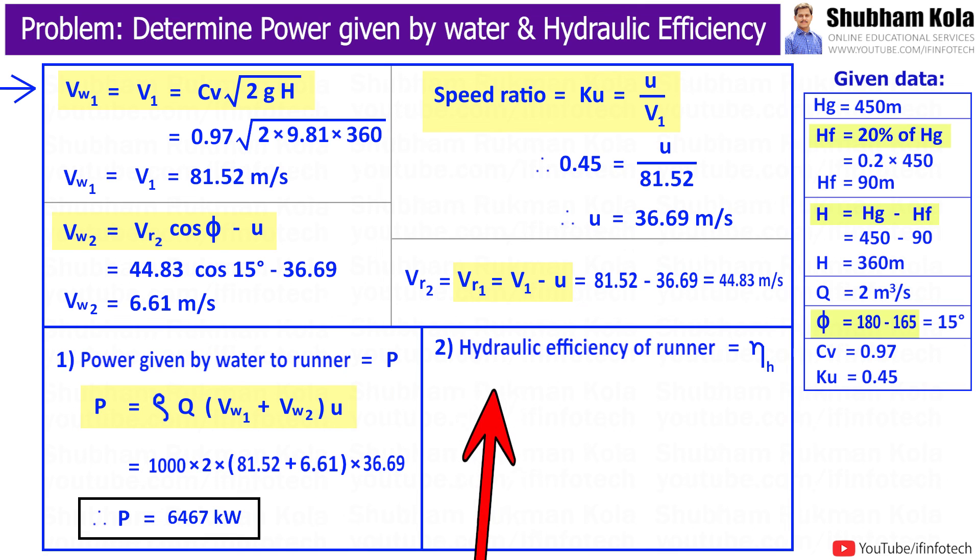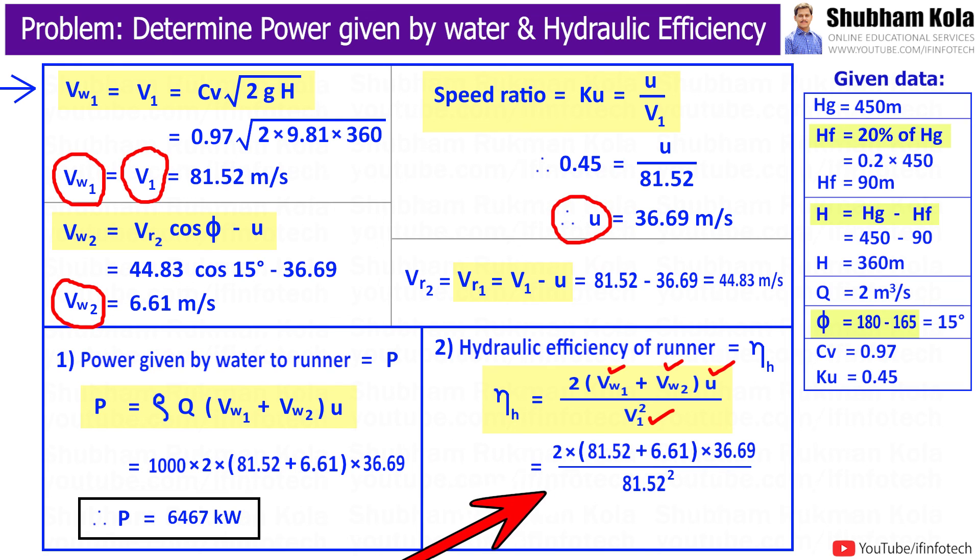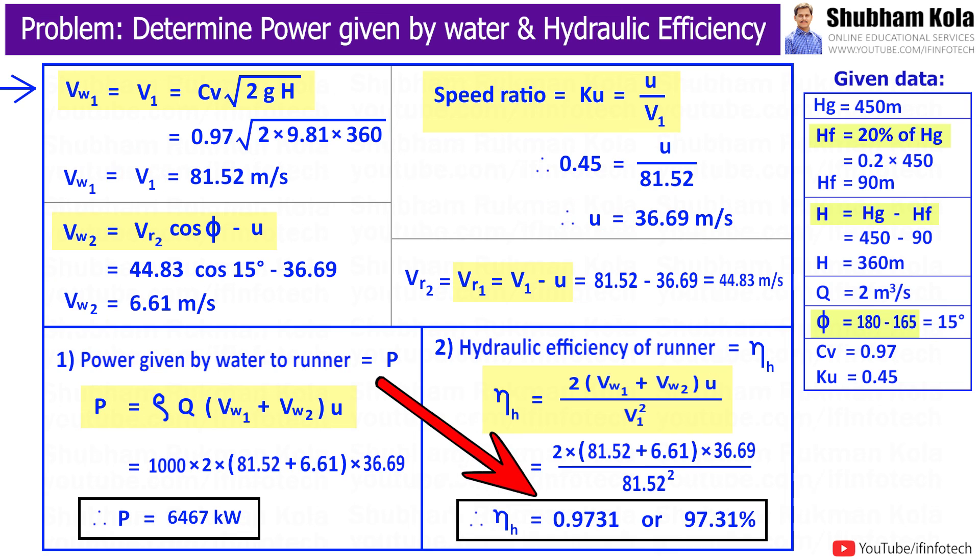Now in the third step, we are going to calculate hydraulic efficiency of runner. Here we have all the values. Therefore, by calculating this, we will get hydraulic efficiency of runner as 0.9731 or 97.31 percent.